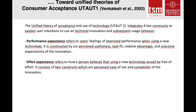The UTAUT model examines four key constructs to explain user intentions to use a technical innovation and subsequent usage behaviors: performance expectancy, effort expectancy, social influence, and facilitating conditions. Performance expectancy refers to the user's feelings of improved performance when using a new technology. It is constructed by perceived usefulness, task fit, relative advantages of the technology, and outcome expectations. It is similar to perceived utilities in the TAM model. Effort expectancy refers to how a person believes using the new technology would be free of effort, consisting of perceived ease of use and complexity.